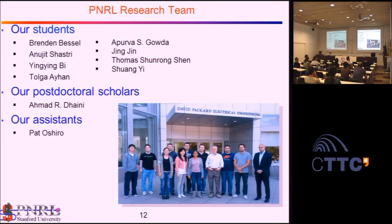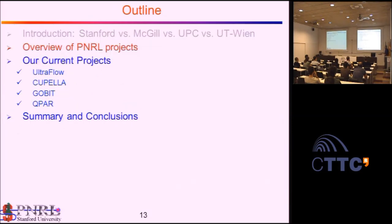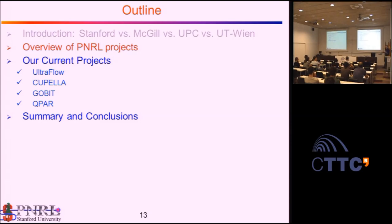That's a picture of my current group — of course it always changes. Looking at our list of projects, the main research program is conducted along four research lines: Ultraflow, Capella, Gobit, and QPAR. Ultraflow is an NSF-funded project on next-generation internet architectures. We were trying to both keep the current IP infrastructure and facilitate transmission in very large blocks of the same media.